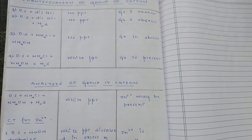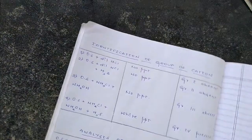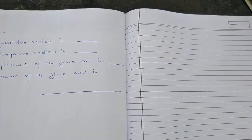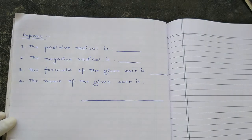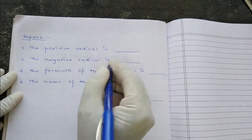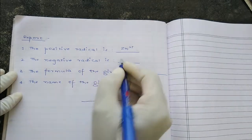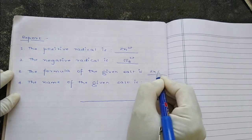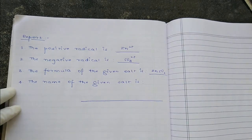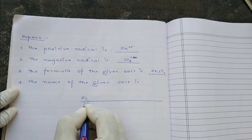In today's given salt, the basic radical that is present is Zn²⁺, and the acid radical is sulphate. At the end we write the report: the positive radical in the given salt is Zn²⁺, the negative radical is sulphate SO₄²⁻. The formula of the given salt is ZnSO₄. The name of the given salt is zinc sulphate.